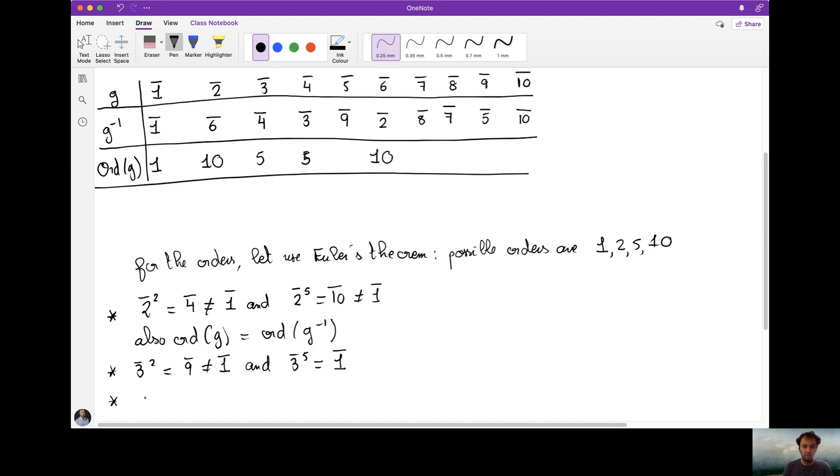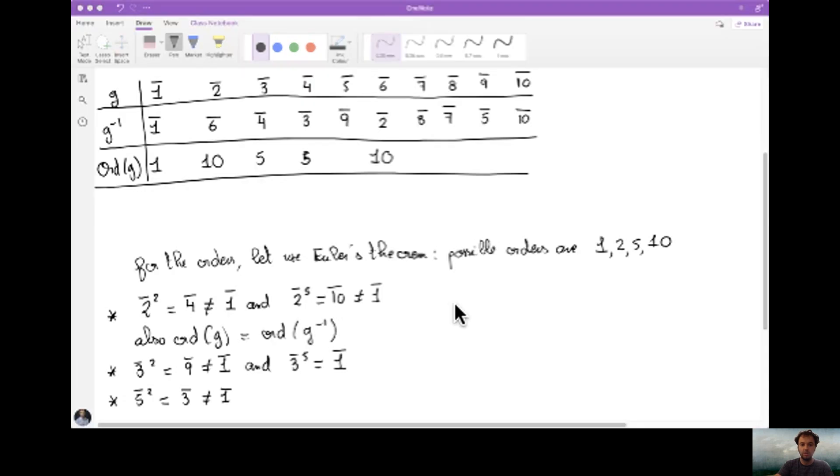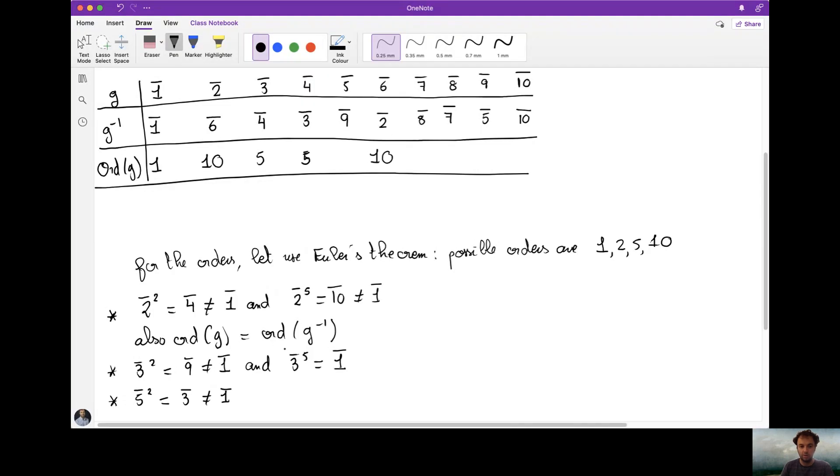Same thing, let's continue. For the order of 5, 5 to the square is 25, 25 is 3, so it's not 1. And if you do 5 to the power 5, we do this calculation, you also get 1. So the order and 5 to the power 5 is 1, so therefore the order of 5 is 5, therefore the order of 9 is also 5 here.